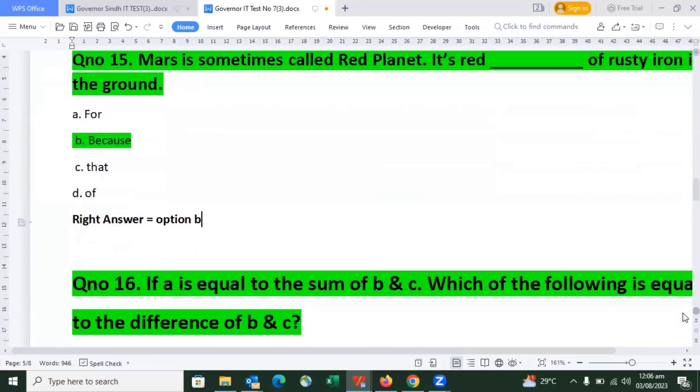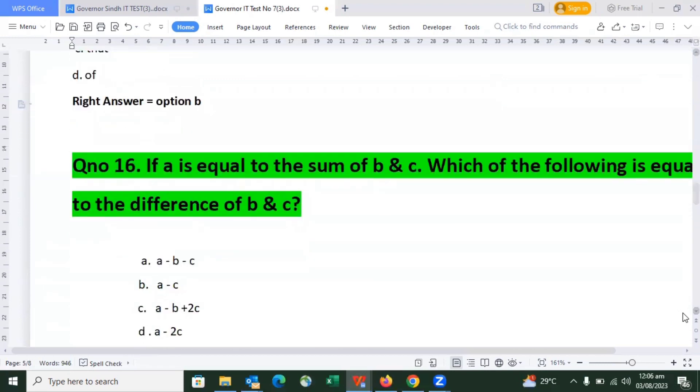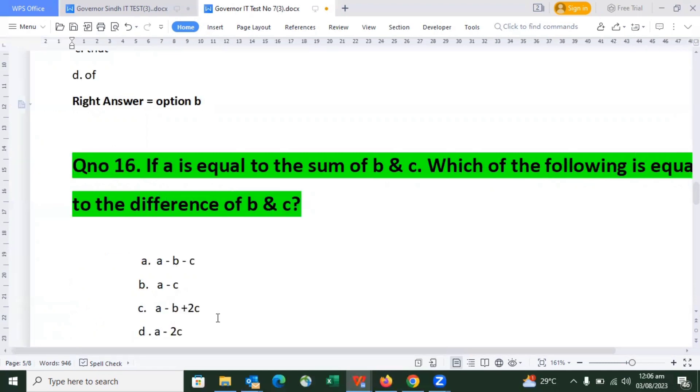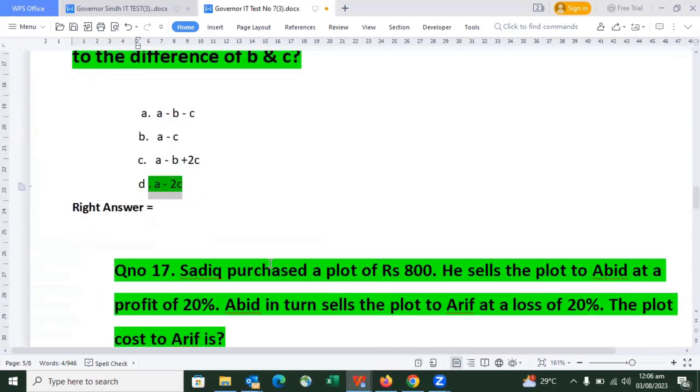Question number 16 is mathematics related, which is in the test we uploaded. If A is equal to the sum of B and C, which of the following is equal to the difference of A and C? The right answer is 3B minus 2C, which means option D is the right answer.